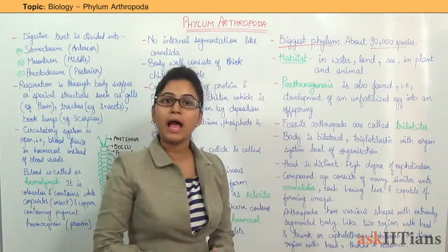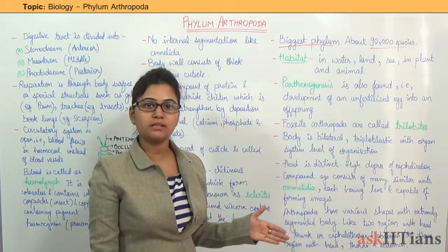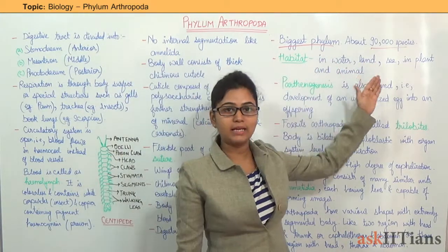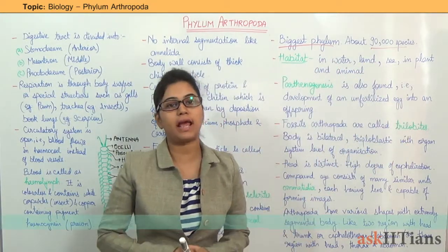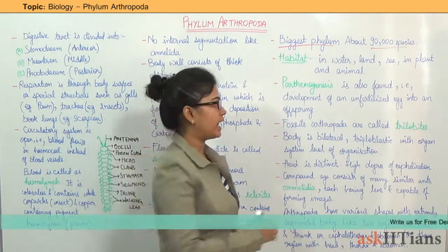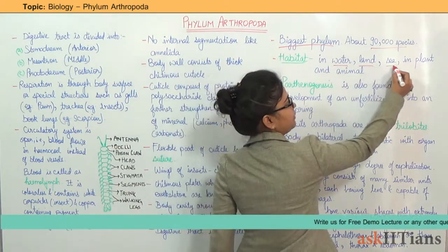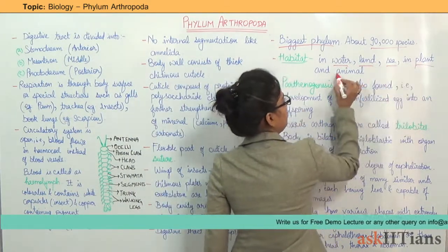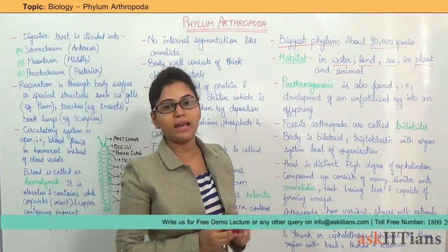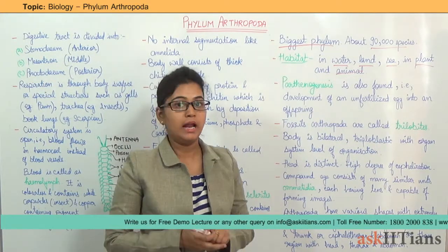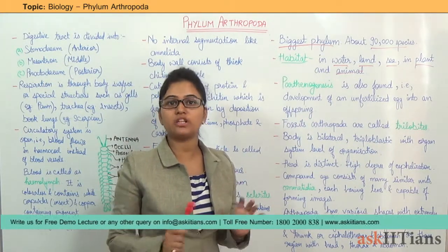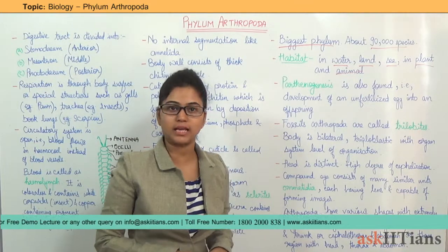Next is the habitat. Habitat is in water, in land, in sea, in plants, in animals — everywhere they can be found. So there is no limitation. Because it is the biggest phyla, it is natural that it might be found in each and every habitat.